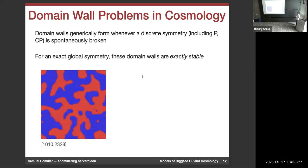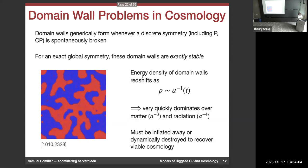Now there's going to be a problem. When we spontaneously break a discrete symmetry, generally domain walls form in the early universe — including for CP, but also for any kind of internal symmetry. If the symmetry is exact, these domain walls are exactly stable. This leads to cosmological issues because their energy density redshifts like 1/a — their energy is proportional to their area — so it very quickly dominates over matter and radiation. They either have to be inflated away after they form, or somehow destroyed dynamically to recover a viable cosmology.